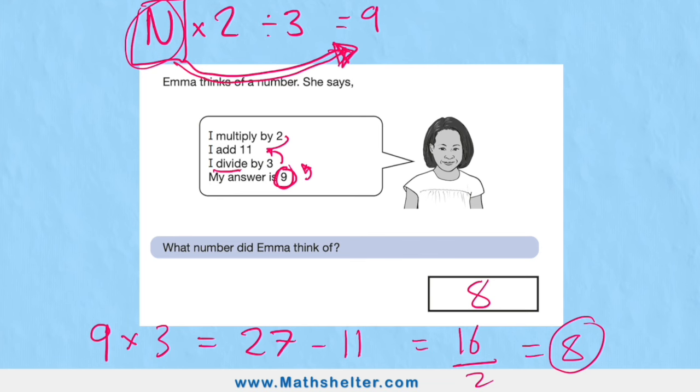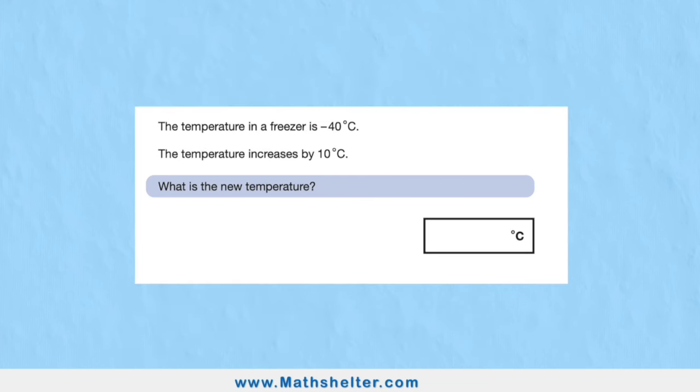Question five, our last one. The temperature in a freezer is minus 40 degrees Celsius. The temperature increased by 10 degrees. What's the new temperature? Some key words here: minus 40, increase, and 10 degrees.